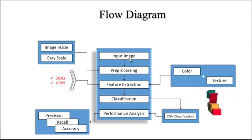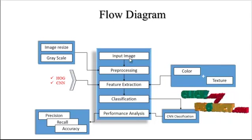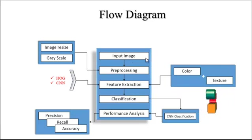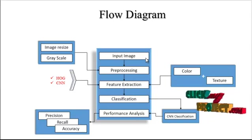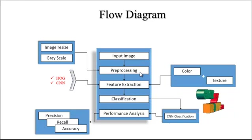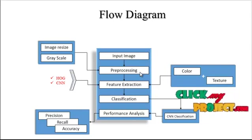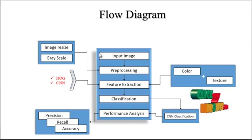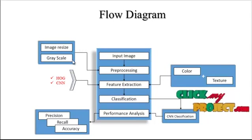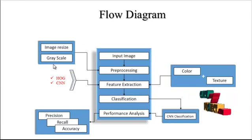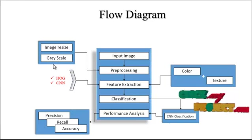The input image is taken from the dataset. The dataset consists of both tumor images and normal mammogram images. After getting the image from the dataset, we move to the next step of the project — that is preprocessing. In preprocessing, we have carried out two stages: the first stage is image resize, and the second stage is grayscale conversion. By these two steps, we are improving the quality of the image.